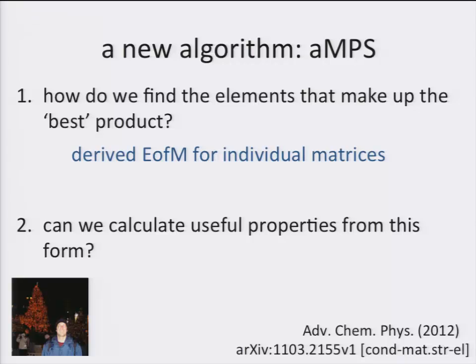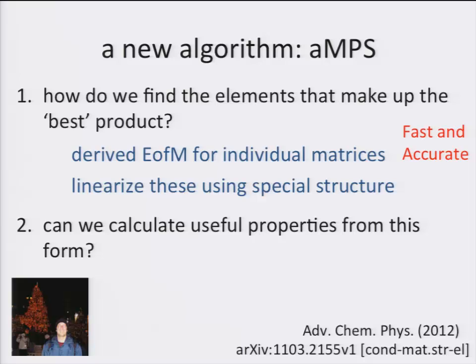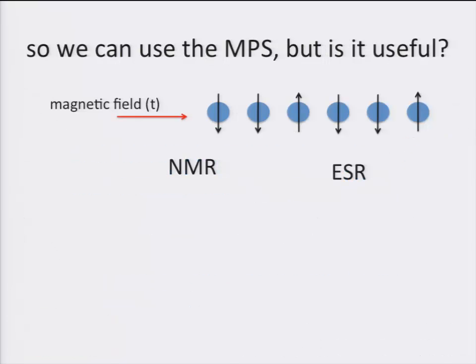We did this by deriving equations of motion for the individual matrix elements. We were then able to linearize these equations by using this special structure of the matrix product state. Thus, we were able to develop an algorithm that was both fast and accurate. The result of the simulation is still a matrix product state, so we're still able to efficiently calculate expectation values through clever tensor contractions. We were able to get more out of this, however, and include efficient methods for computing the response functions and excitations, more time-dependent type properties or phenomena.